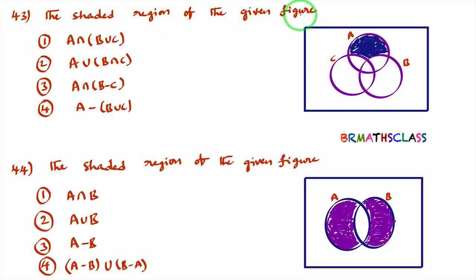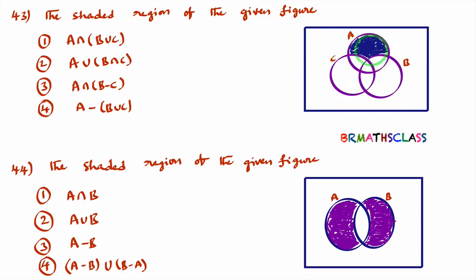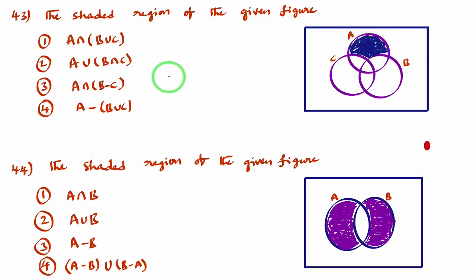Observe question number 43 — they are asking the shaded region of the given figure. You can see that the full first circle is A, but only this part is shaded. This is only A, correct? The actual full A is the entire circle, but this shaded part is only A.